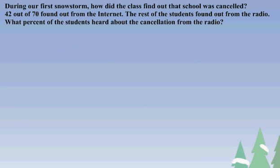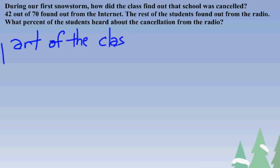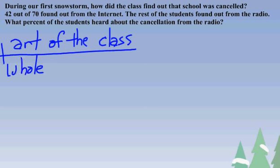Now that we've estimated, let's find the actual answer. First, I take the fraction that found out from the Internet — 42 out of 70 — part to whole. Next, I subtract 70 minus 42 to find out the number of children that heard from the radio. Then I take 28 and put it over 70, part to whole.